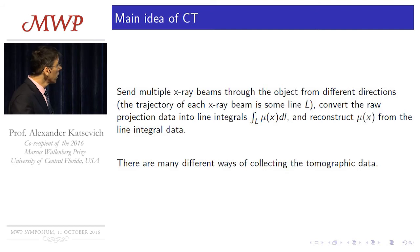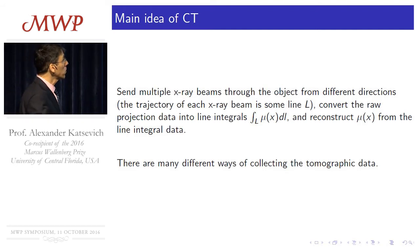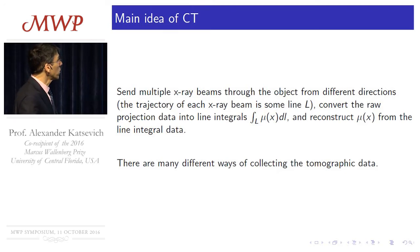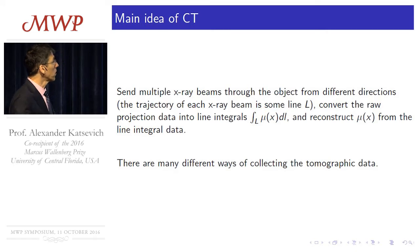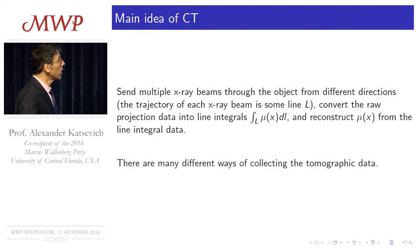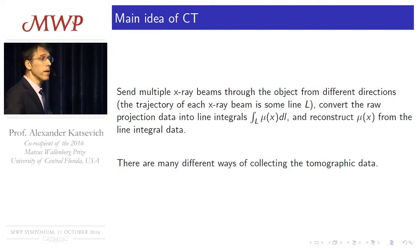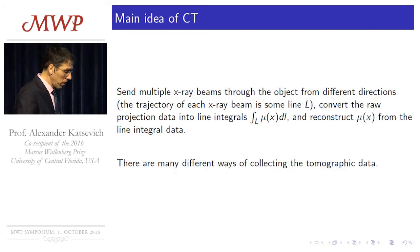The idea is simple: just send multiple pencil beams through the object from many different directions. Each trajectory, each pencil beam is some line L. Then convert the raw projection data into line integrals, and reconstruct the function mu from these line integrals. There are many different ways to scan an object, and respectively many different ways to collect the tomographic data.